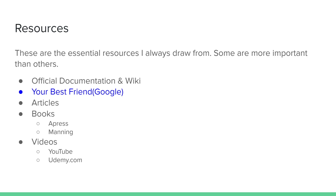My favorite source is probably books and articles on the web. Every time I'm learning something new, I look at books. My favorite websites for books are Manning and Apress — they both have really good books. For articles, search for what you're trying to learn and you'll have plenty of blogs and tutorials to read. Videos are actually my last source that I draw from, because a lot of people are not very good at tutorials — they leave out tons of detail and are not great at explaining things.